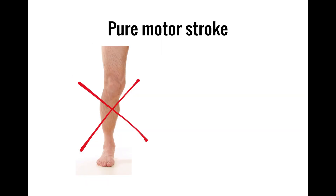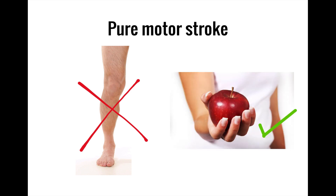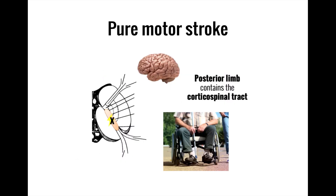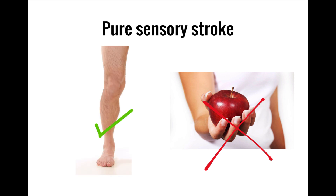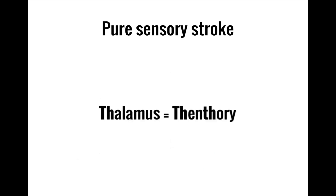A pure motor stroke results in hemiparesis of the contralateral face, arm, and leg without any sensory deficits or associated cortical signs. This often results from ischemic damage to the posterior limb of the internal capsule, which carries the corticospinal and corticobulbar tracts. A pure sensory stroke features numbness of the contralateral face, arm, and leg without any motor deficits or associated cortical signs. A pure sensory stroke often results from ischemic damage to the thalamus, since the thalamus processes sensory information.